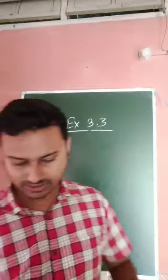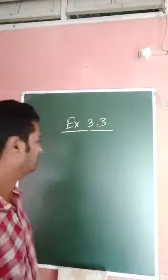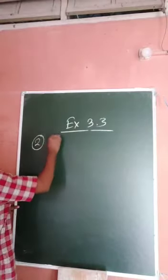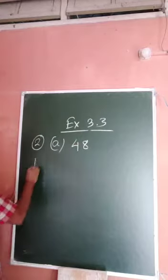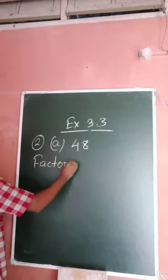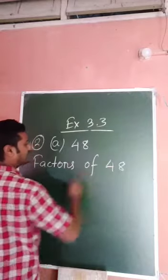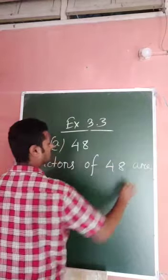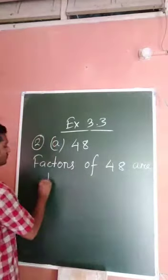Okay, so come to question number two: find the factors of a given number. Part (a) is 48. Factors of 48 are — all of you know that 48 is divisible by 1.